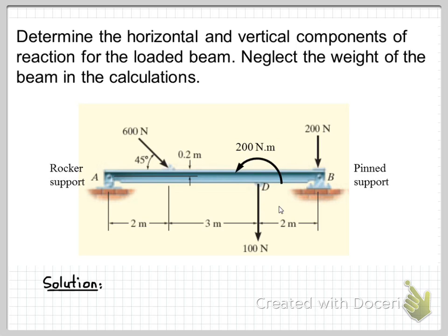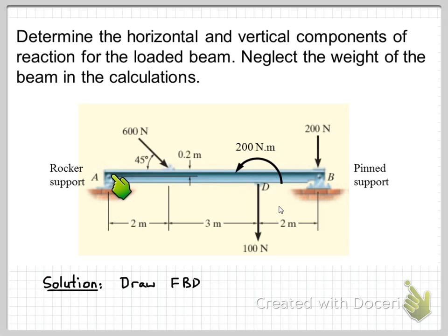So let's consider our approach to solving this problem. Whenever we do an engineering mechanics problem the first thing we do is draw the free body diagram — that's to represent the body we're analysing removed from anything it's attached to. We'll remove the supports at ends B and A and replace those supports by the forces and/or moments that they provide to the beam to balance the applied loads. Then we apply the equations of equilibrium and solve for our unknown reaction forces and/or moments.